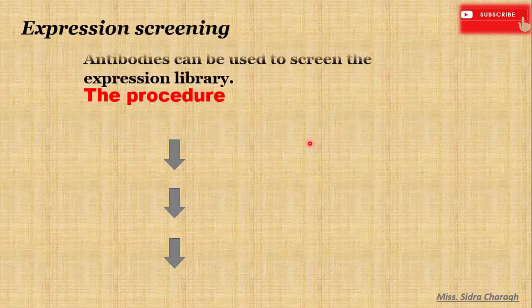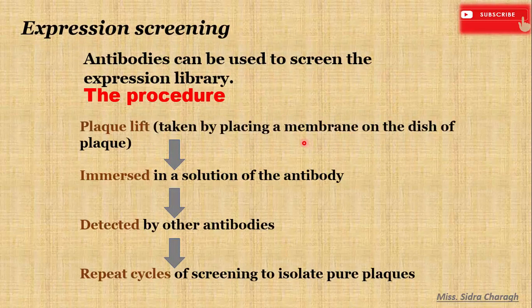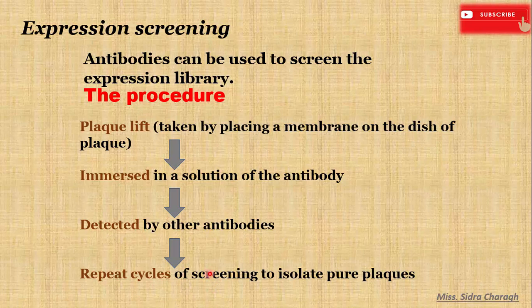Here is the procedure for expression screening. We use antibodies to screen the expression library. First, a plaque lift is taken by placing a membrane on the dish of the plaques and then immersing in a solution of antibodies. Antibodies bind to the antigen, and then we detect it by other antibodies. We repeat cycles of screening to isolate pure plaques having our desired gene of interest.